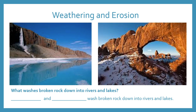We just talked about two different types of weather that can cause weathering and erosion. What washes broken rock down? It was rain and snow. Rain and snow wash broken rock down into rivers and lakes.